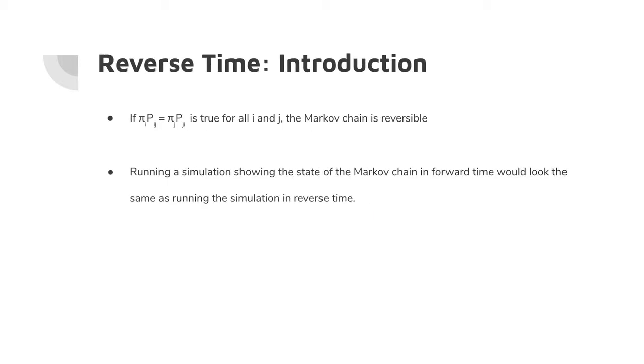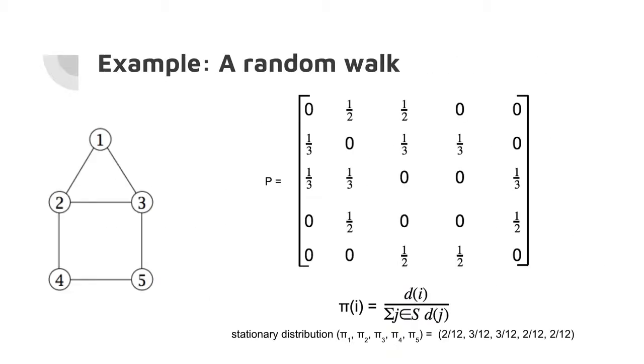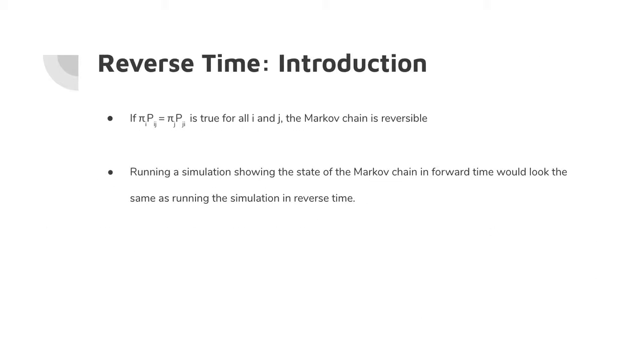Reverse time means that if you run a simulation of your random walk, you won't be able to tell if your simulation is running forwards or backwards just by watching it. Because the stationary distribution is balanced around 0, it's just as likely that, as long as you're spending a little bit more time at states 2 and 3, you're going in forward time as it is you are going in reverse time.